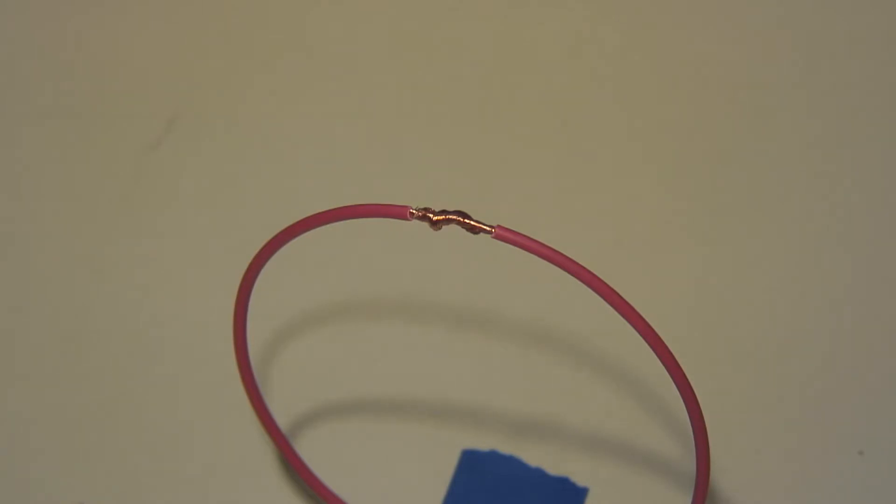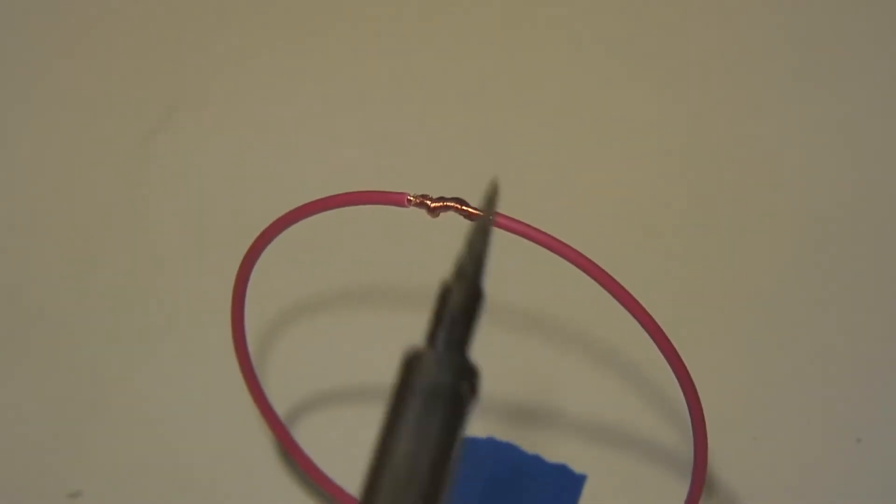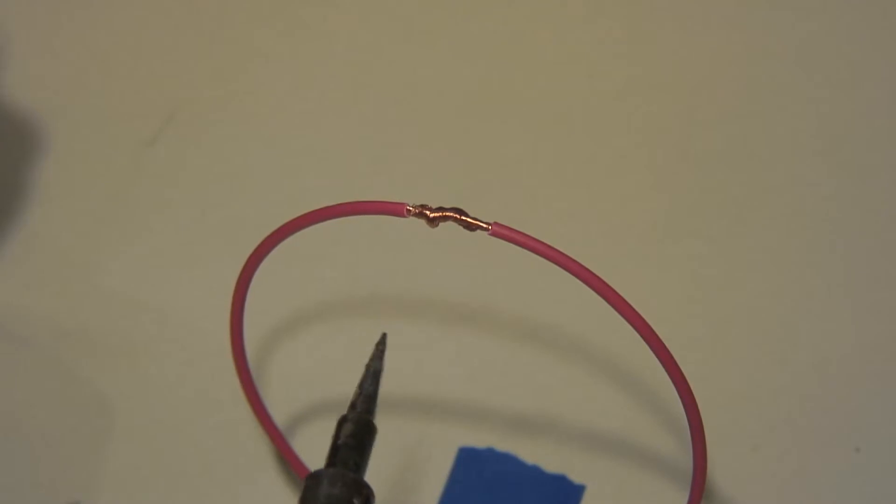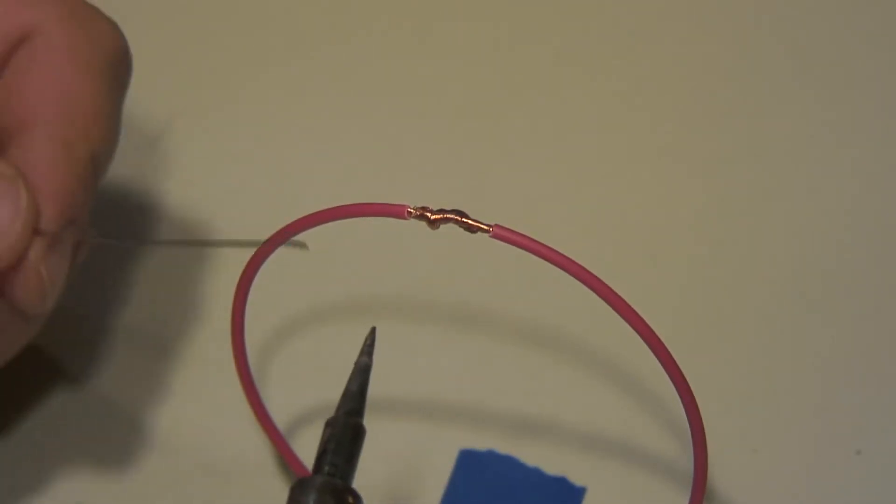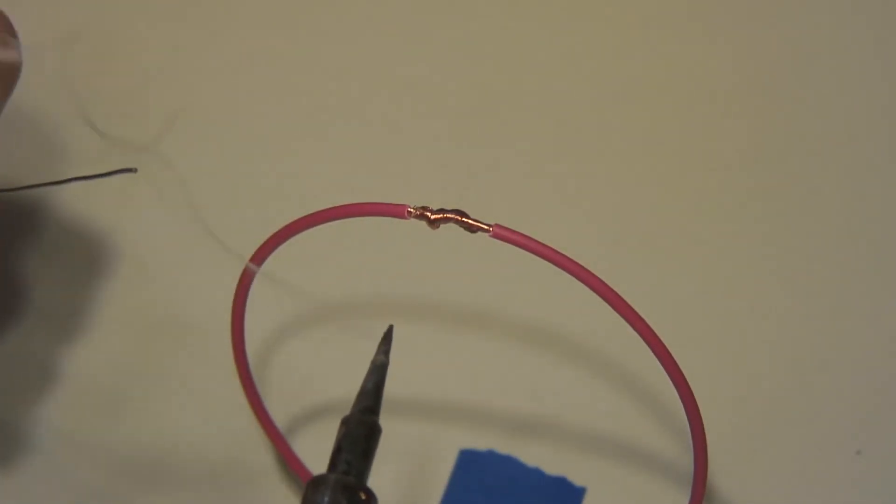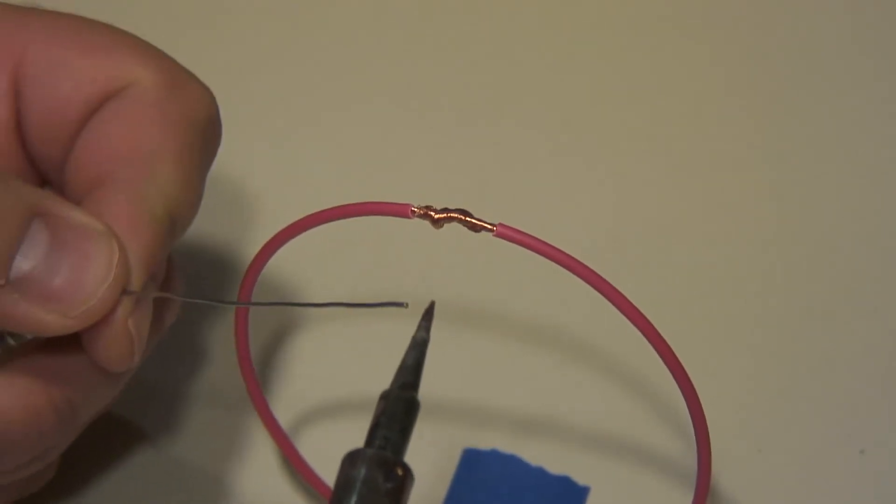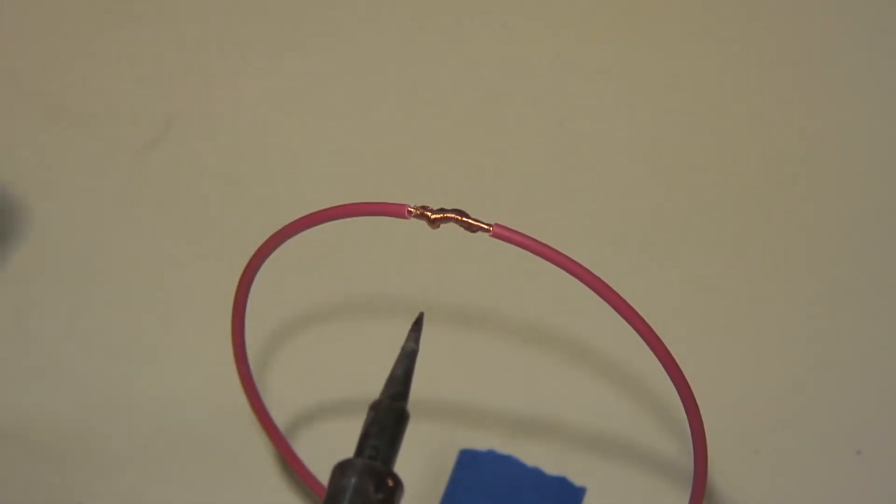Okay, so we're going to get our iron out here, and when you go to tin the tip of your iron, because you do need to tin the tip of your iron, your solder should melt immediately. If your solder doesn't melt right away, then your iron is not hot enough.